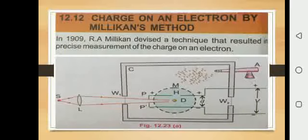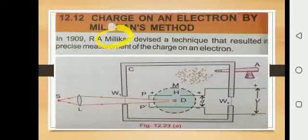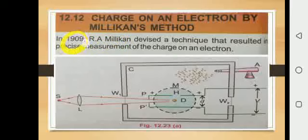Our next important topic is the charge on an electron by Millikan's method. As you know, the electron was discovered by J.J. Thomson, while the charge on an electron was discovered by Millikan. This experiment was introduced by Millikan in 1909 — remember this for MCQs.